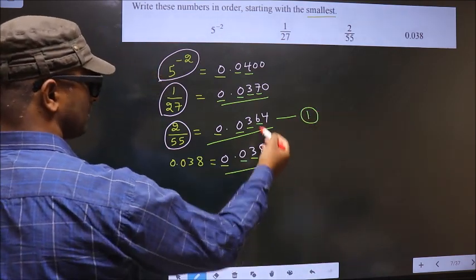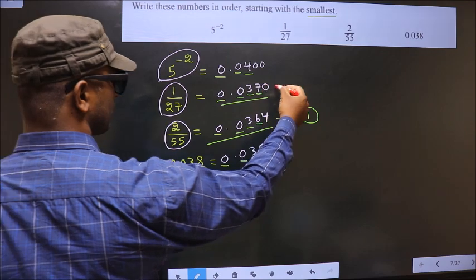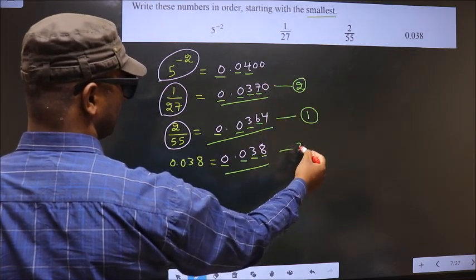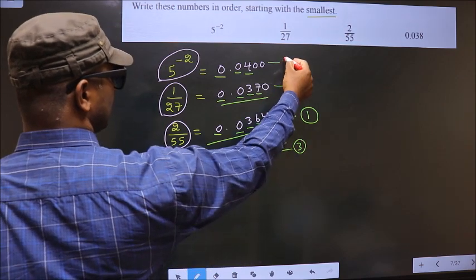Next, smallest of 8 and 7 is 7, so this is at the second place. And this is at the third place. And finally, this is at last.